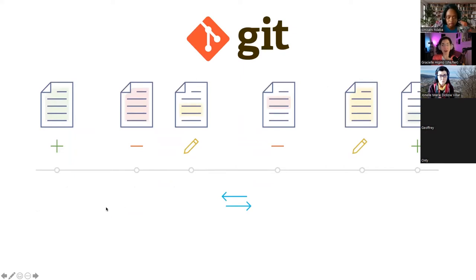Sometimes we make a change and copy a file, naming it differently to describe that change. But then we end up with a messy folder and we don't know which file is the newest or the most final — that generates confusion. That's where Git comes in handy. With Git, we don't store versions of files — we store the history of each file.